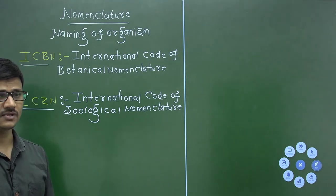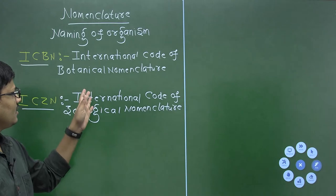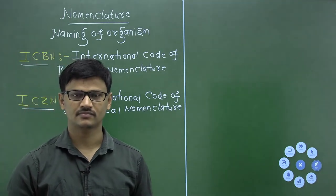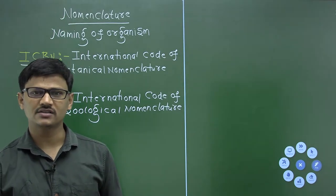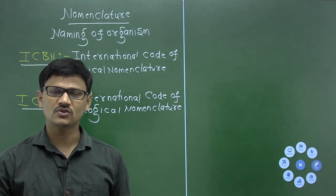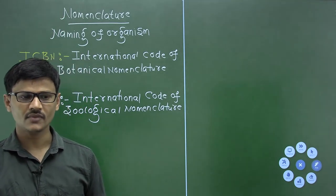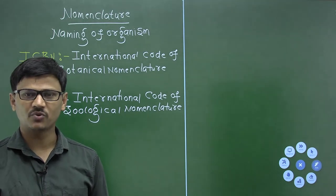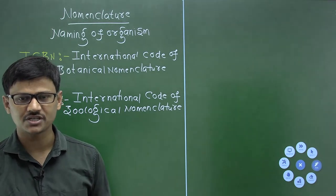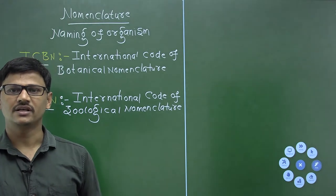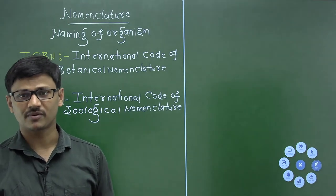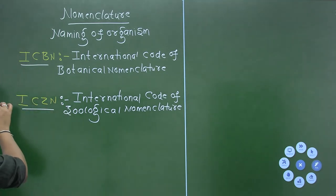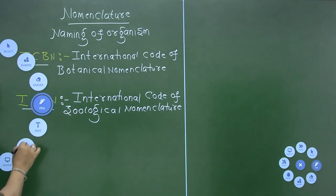For the first time, the idea of naming plants was given by Carolus Linnaeus, who wrote a book called Philosophica Botanica. In that book he mentioned the rules regarding the naming of plants. In addition to ICBN and ICZN, there are some other codes as well.